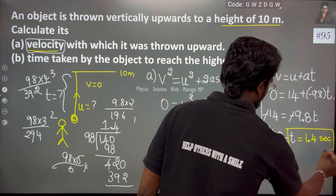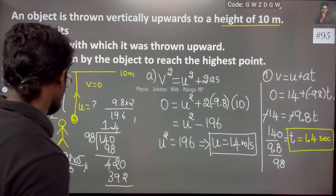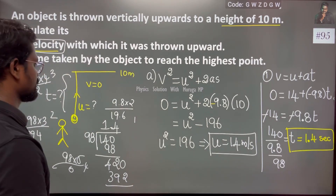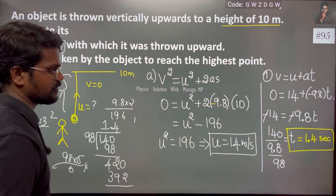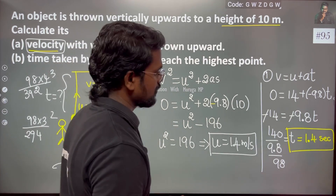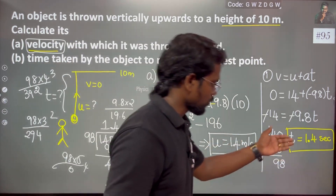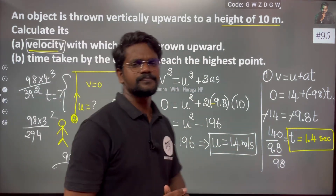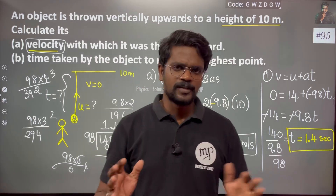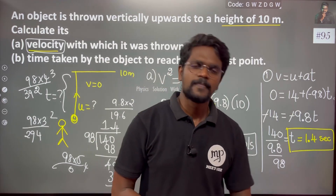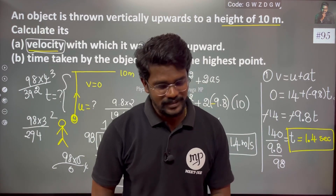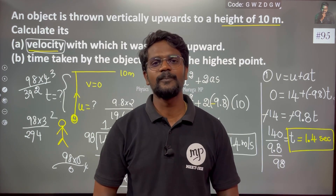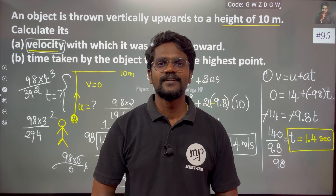So if you throw the object with initial velocity 14 meters per second, in 1.4 seconds it covers 10 meters distance. Thank you, help us with a smile.